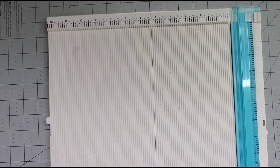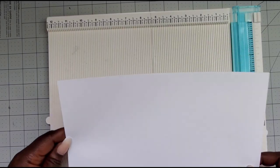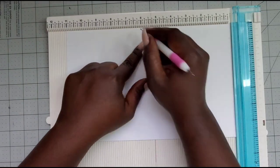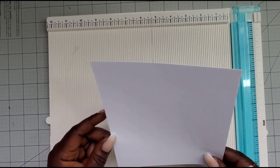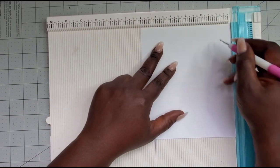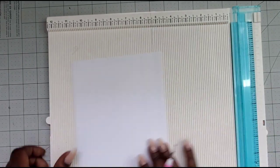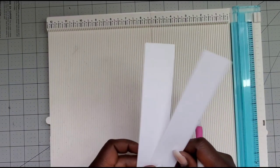Now we're gonna work on the base. You need a piece that is 11 by 7, and on the long side we're gonna score at 5 and 6. You need another piece that measures 6 by 7, and on the short side you're gonna score it at half an inch and at 1 and a half.